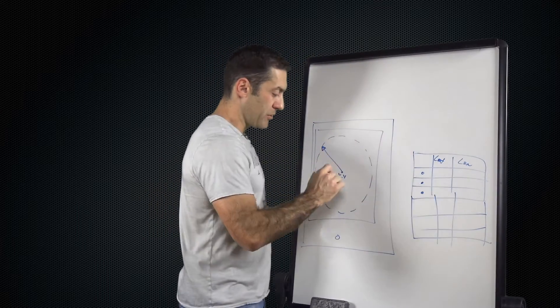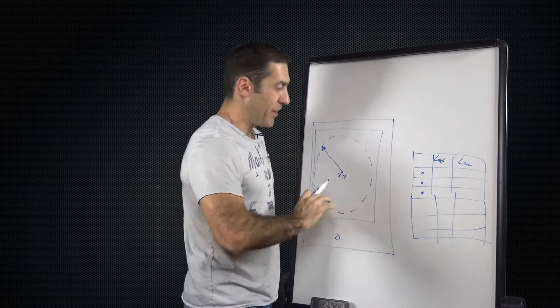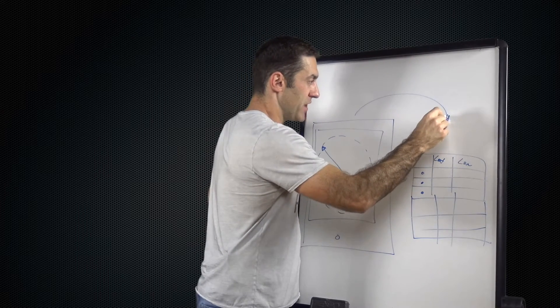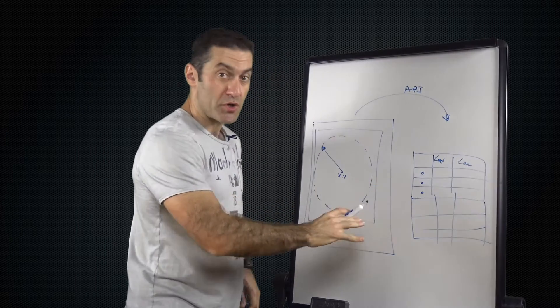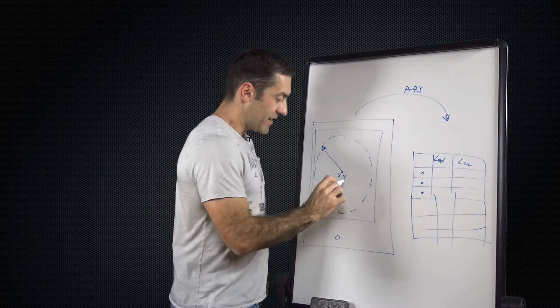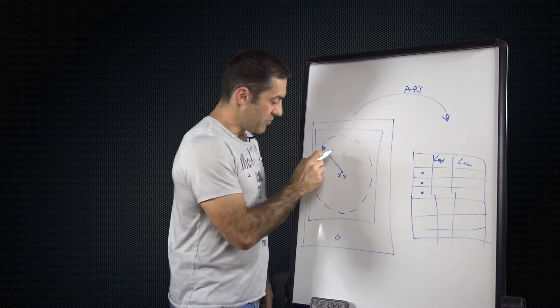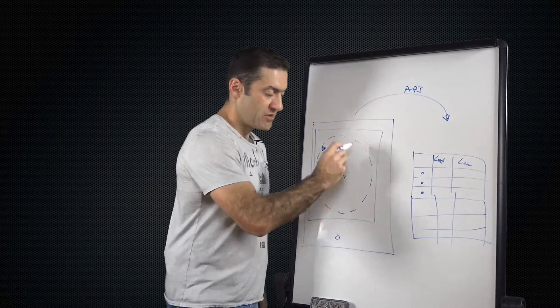And essentially, whenever you move the map around, a request goes out to the server. And this is our API request. And the server performs the search of all the geopoints that can be found within this radius in this circular area.